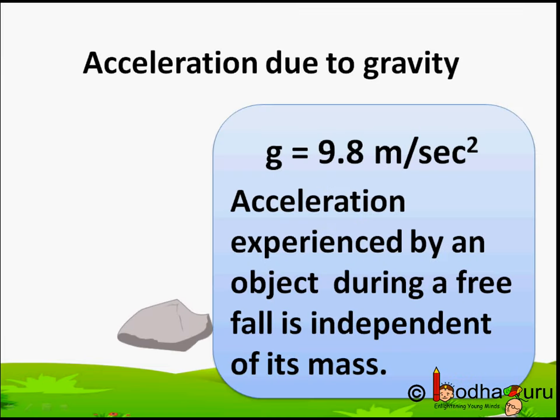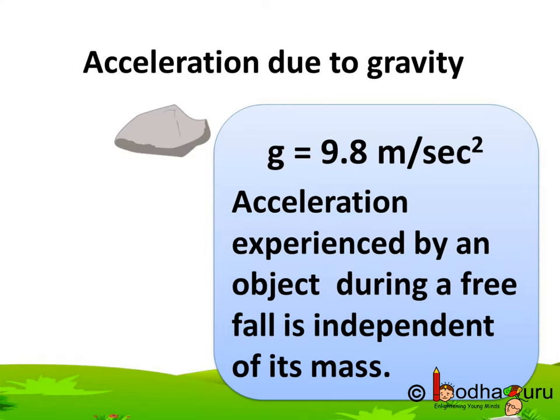Hello children. We already know when an object falls towards the earth under the gravitational force alone, we say the object is under a free fall. And this acceleration of falling object is denoted by g which is equal to 9.8 meter per second square.